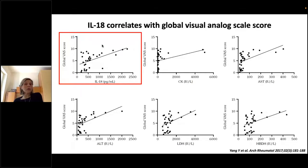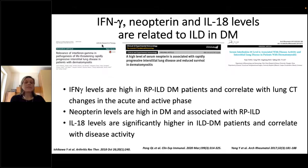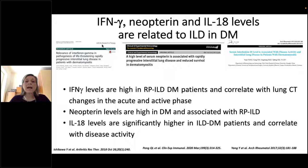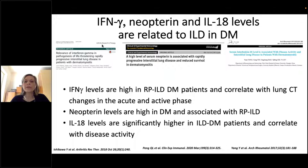These data are relevant because they suggest that the interferon gamma pathway plays an important role in dermatomyositis pathogenesis. Interferon gamma levels are high in patients with rapidly progressive ILD and correlate with lung CT changes in the acute and active phase. Neopterin levels are high in dermatomyositis and related to rapidly progressive lung disease. IL-18 levels are significantly elevated in ILD-associated dermatomyositis and correlate with disease activity.